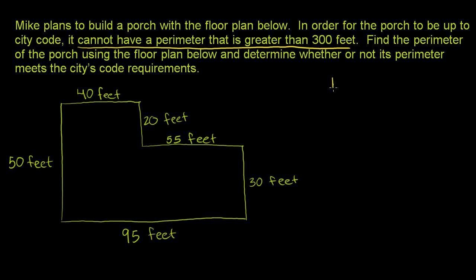So we're going to add up 40 plus 20 plus 55 plus 30 plus 95 plus 50. We need to make sure we've aligned them by place, which we've done here. The ones places are all aligned, the tens places are all aligned. So now let's start on the ones place.